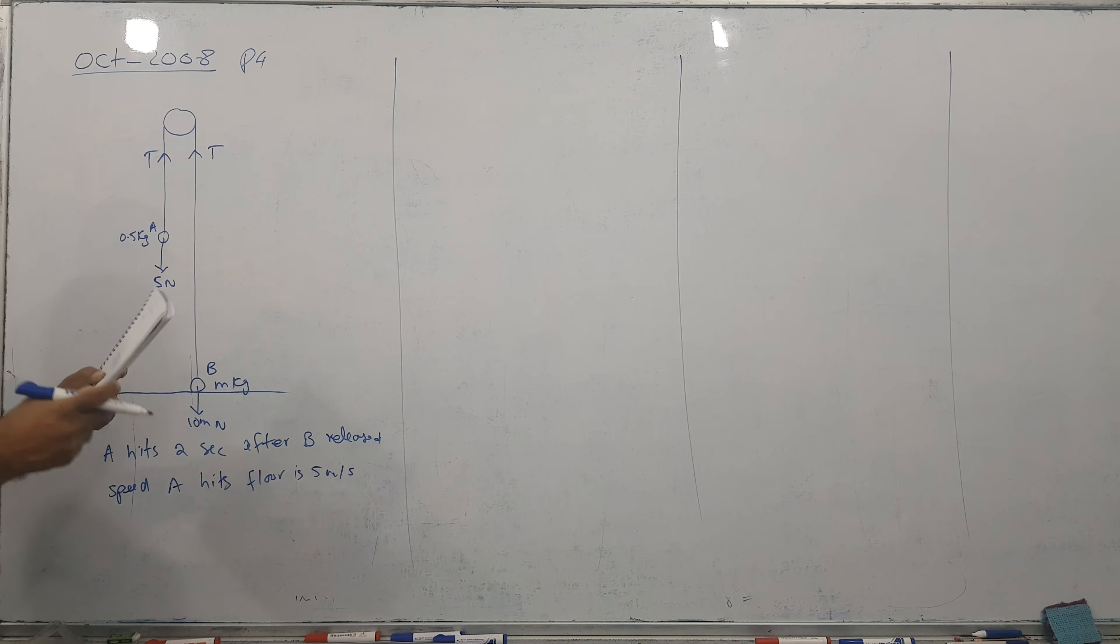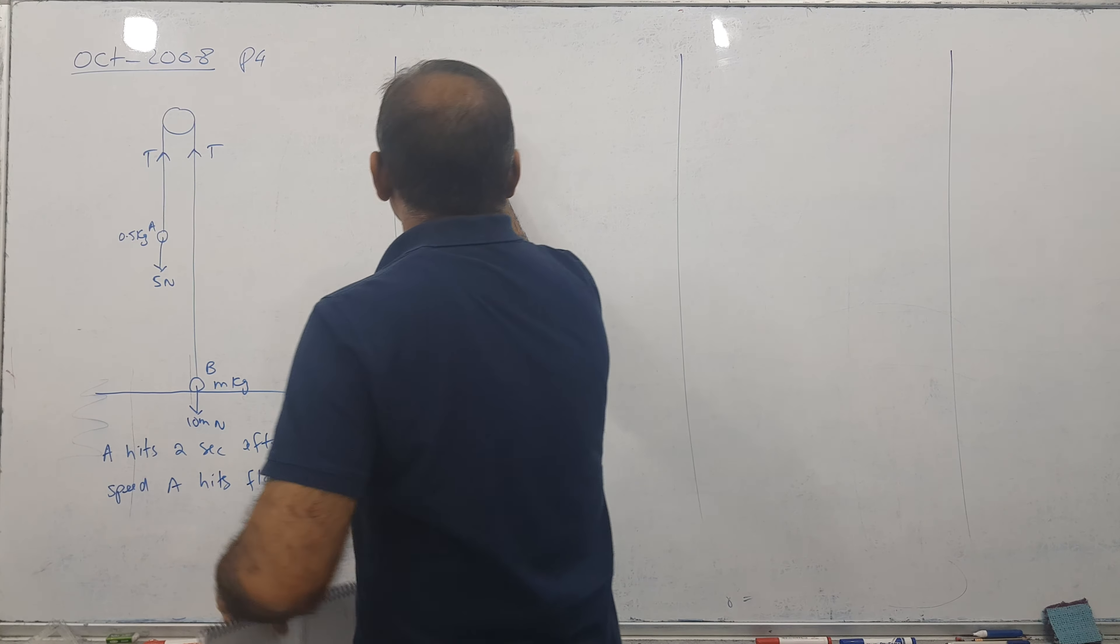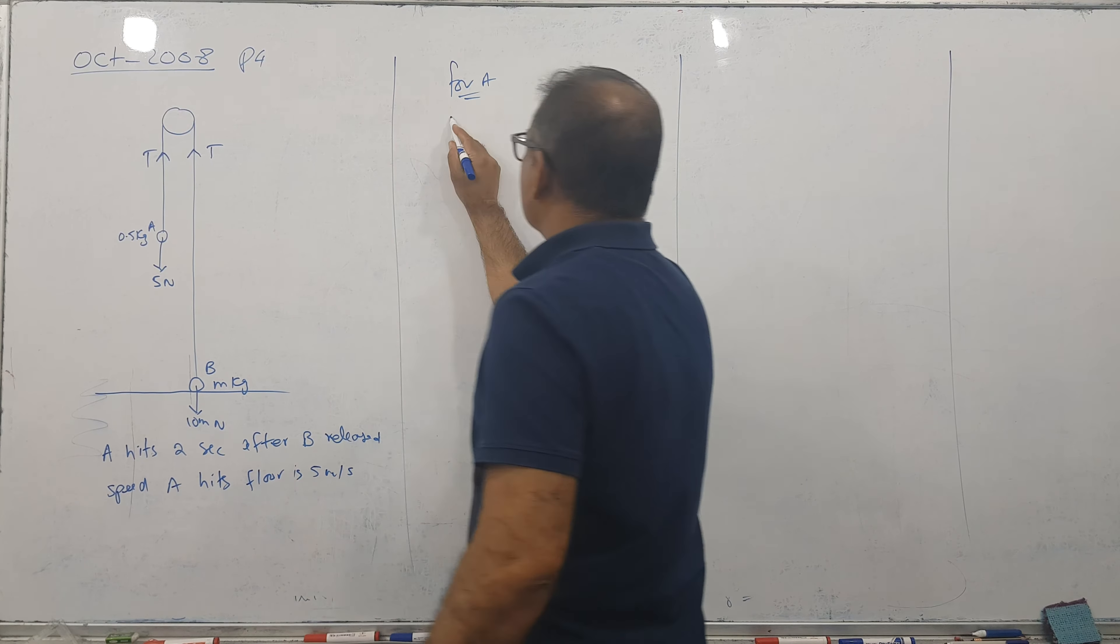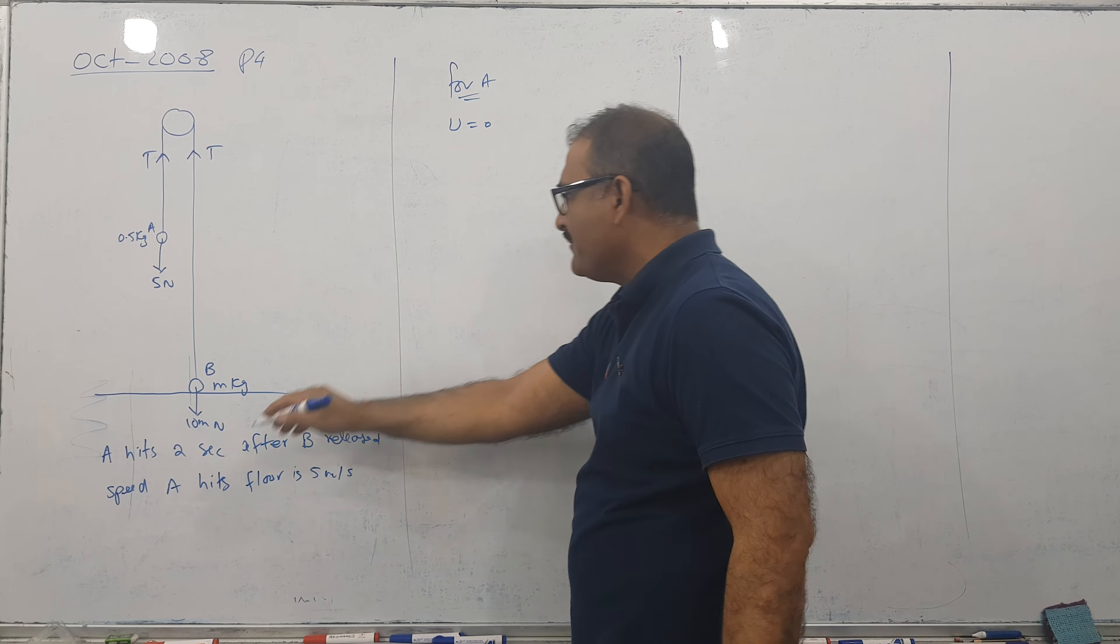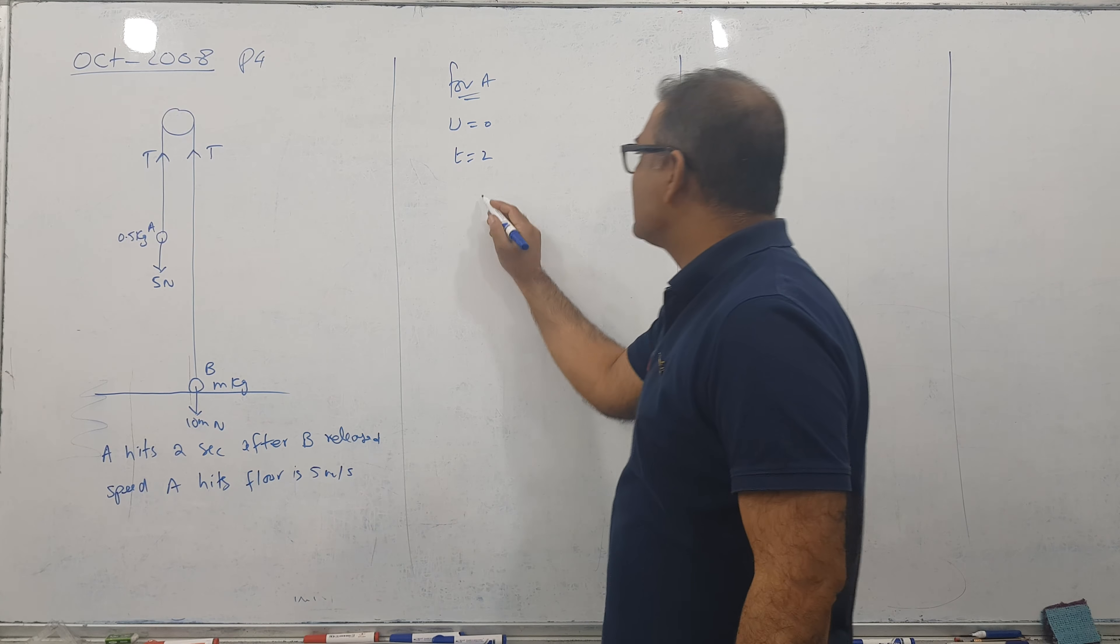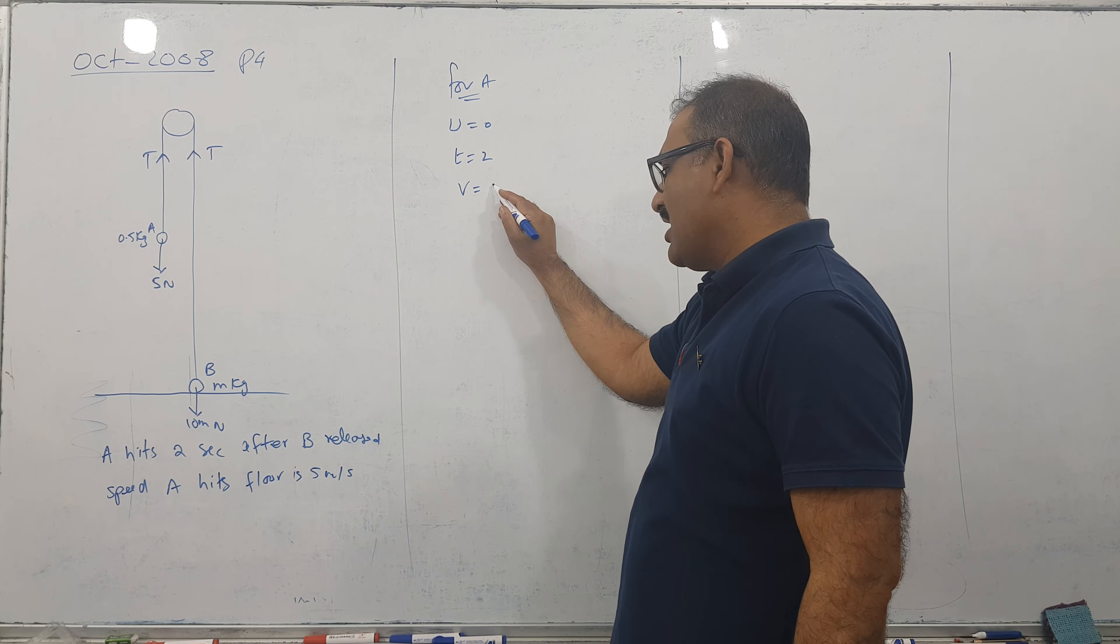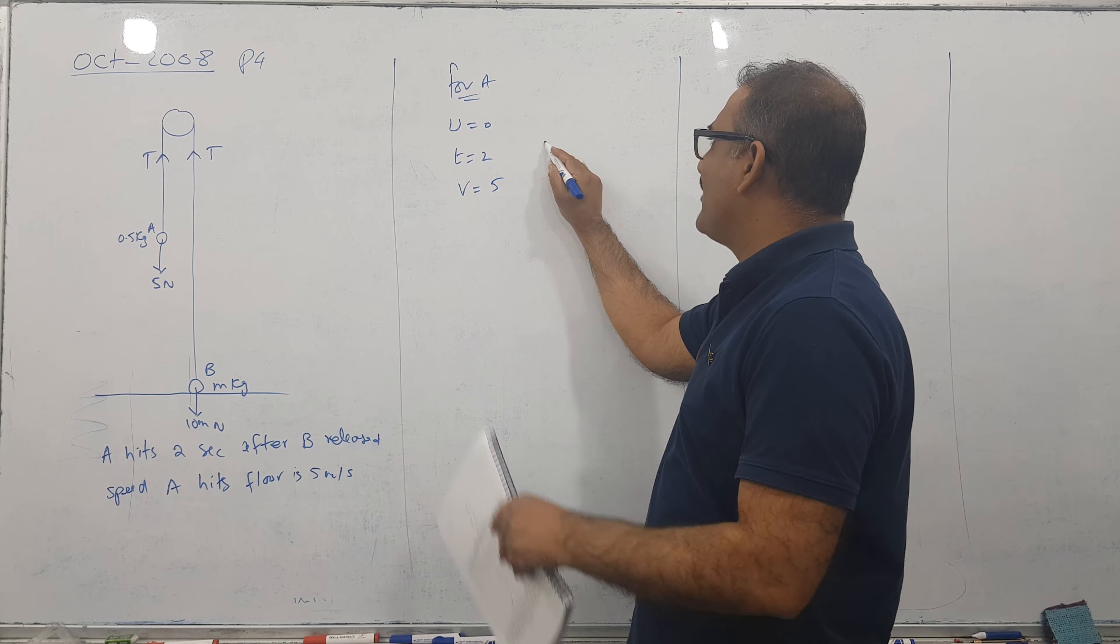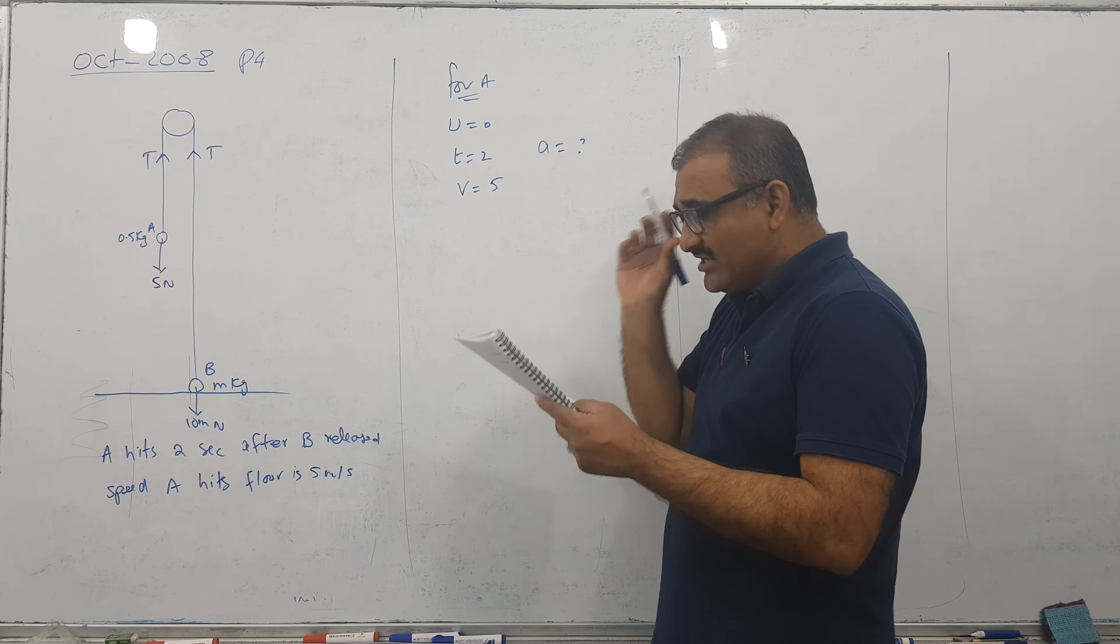So we have found out first acceleration, not hard, I am saying for A particles. Starting from rest, U is 0 and time to hit is 2 seconds and just last speed, just before hitting is 5 and need to find acceleration. So let's see how we can find.